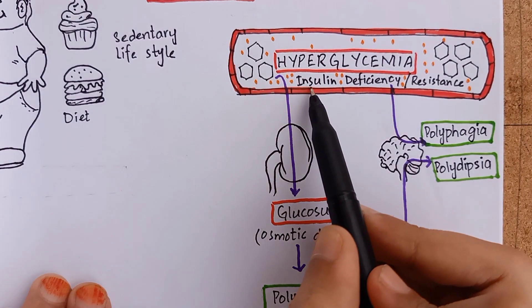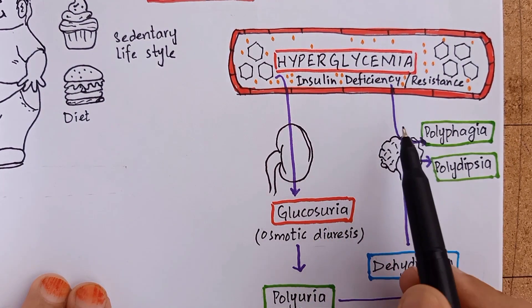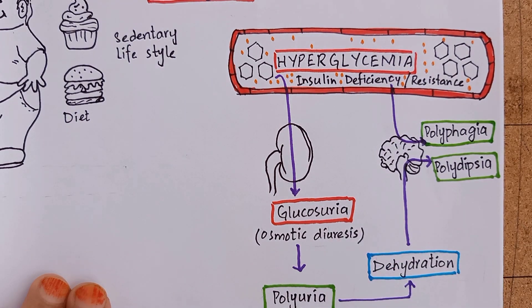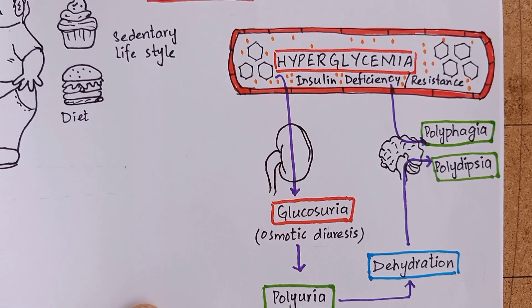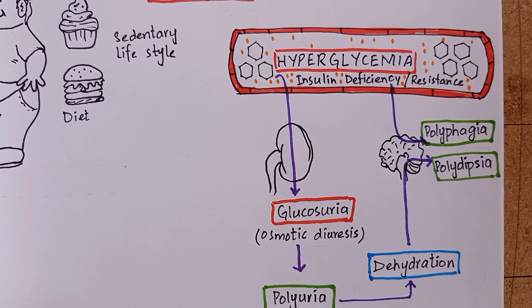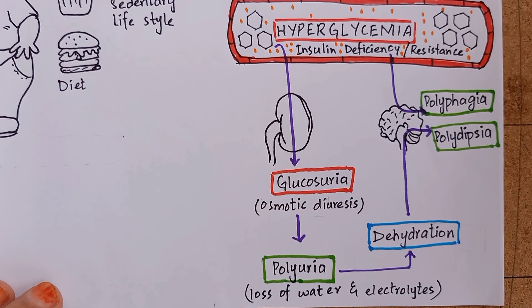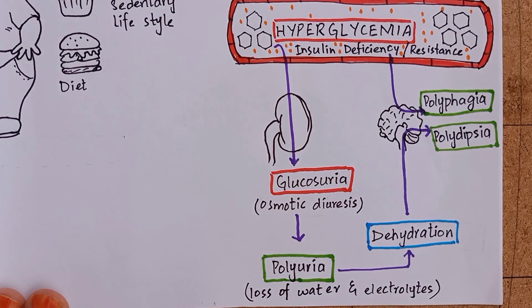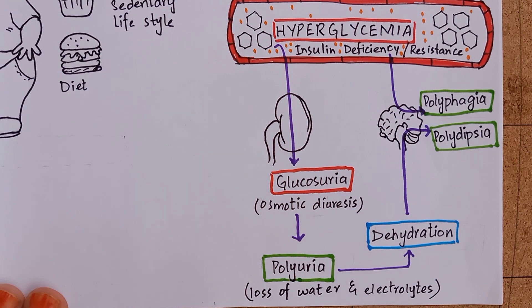Lack of insulin in type 1 and insulin resistance in type 2 can lead to polyphagia, which means an urge to eat more. When insulin is not there or if it is not functioning properly, glucose will not go into the cells, and these starving cells and tissues will create a sense of hunger. Polyurea, polydipsia, and polyphagia are the classic triad of diabetes mellitus.